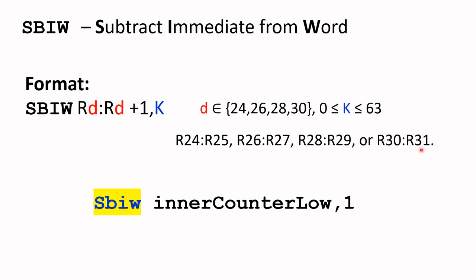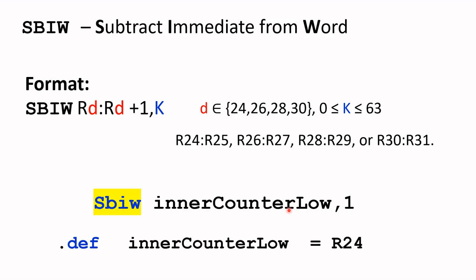Coming back to our example, SBIW inner counter low. The inner counter low was assigned R24, as defined in the early part of the program. So the instruction means it will subtract 1 from inner counter low, which is R24.